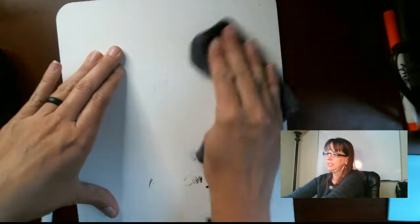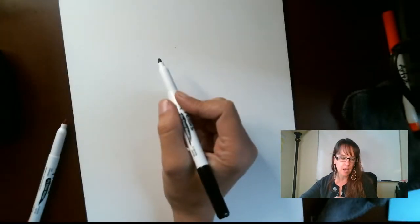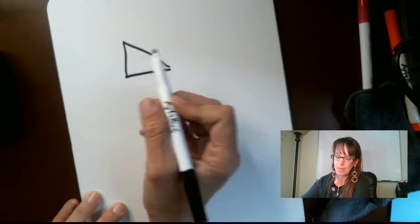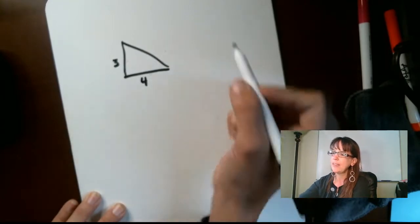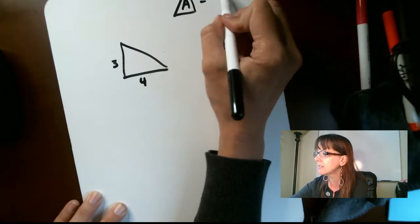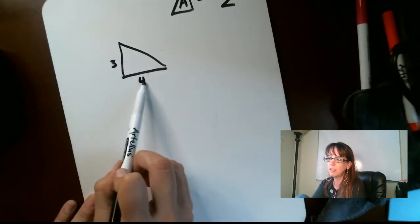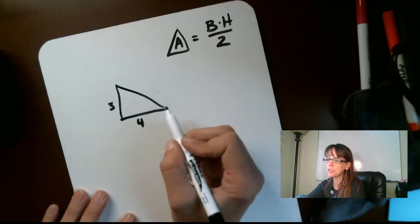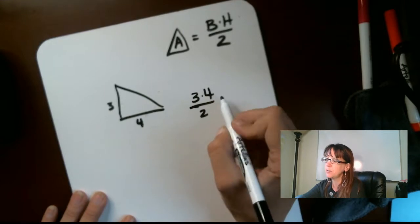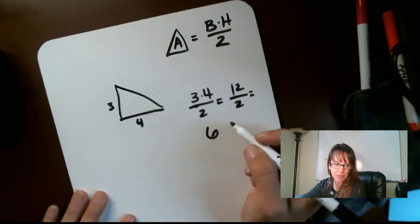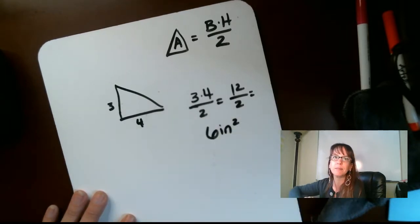Let's go back to triangles. There are a couple of examples on page 38 showing different types. Example 8.3A: this triangle has a base of 4 and a height of 3. The area of a triangle is base times height divided by 2. So we take 4 times 3 divided by 2 — that's 12 divided by 2, which equals 6. Our units are in inches: 6 inches squared.